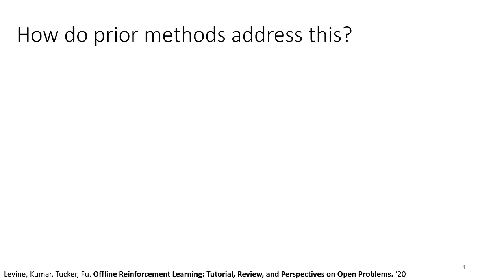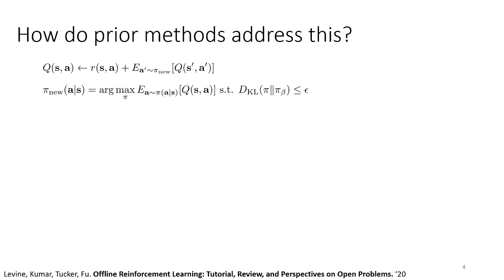So if we want to develop practical deep offline RL algorithms, we need to solve this distributional shift problem. One widely studied class of methods is what I'm going to refer to as policy constraint methods. These adopt some sort of actor-critic structure and update the Q function with an expected value under pi_nu, but modify the policy update to not just maximize Q values but also impose some constraint — for example, that the KL divergence between pi and pi_beta should be bounded by epsilon.